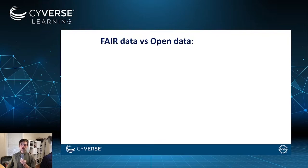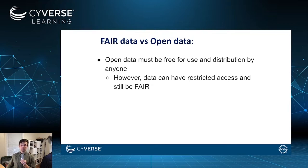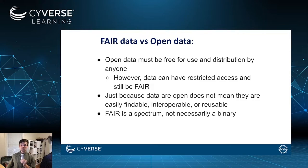So how does FAIR data compare to open data? Open data must be free for use and distribution by anyone, whereas data can have restricted access and still be considered FAIR. On the other hand, just because data are open and free for use and distribution by anyone doesn't mean that they're easily findable, interoperable, or reusable by others. It's also worth noting that FAIR is a spectrum and not necessarily a binary — your data can be more or less FAIR, whereas open data have to be free for use and distribution by anyone.